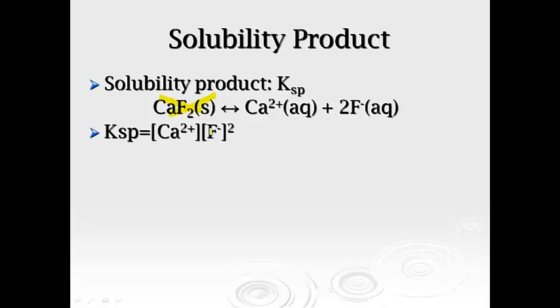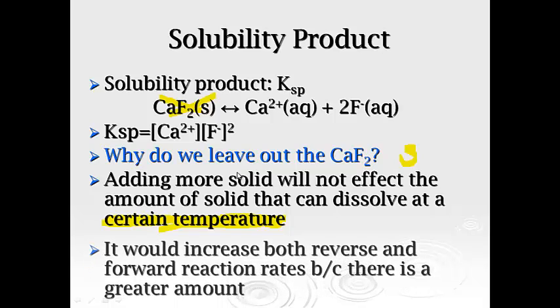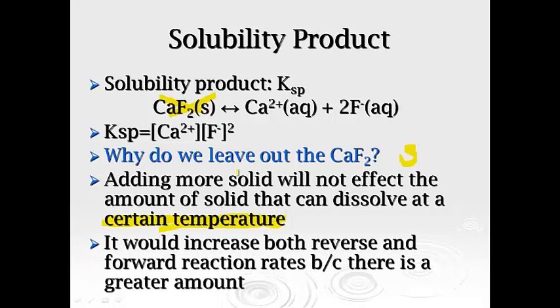So it's just a reflection of how many ions are formed. And as a reminder, why do we leave out the calcium fluoride? Well, it's solid, so we don't include that. But adding more solid will not affect the amount of solid that can dissolve at a certain temperature. We've talked about this, that the capital Ks are temperature dependent. The same goes for Ksp, which makes sense because if you heat it up, more of it's going to dissolve.